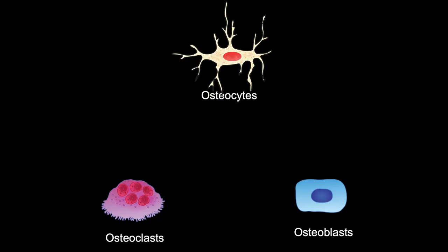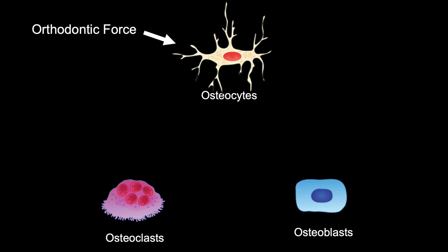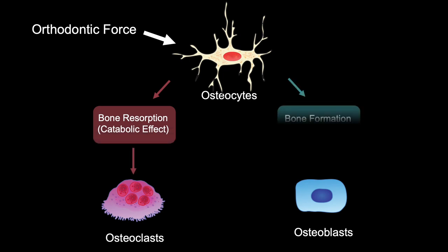That third type is called osteoclasts. These cells, especially the osteocytes, are considered the ones that orchestrate the movement. Osteocytes recognize the mechanical stimulation in response to orthodontic forces and, based on the direction of the force, activate the osteoclasts to resorb the bone and activate the osteoblasts to make the bone.